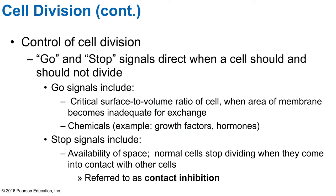As far as control of cell division, there are go-and-stop signals that direct when a cell should and should not divide. While these aren't fully understood, we know that the ratio of cell surface area to cell volume is important. Chemicals, growth factors, and hormones can provide go-signals. Stop signals include available space — normal cells stop dividing when they come into contact with other cells, which is called contact inhibition.